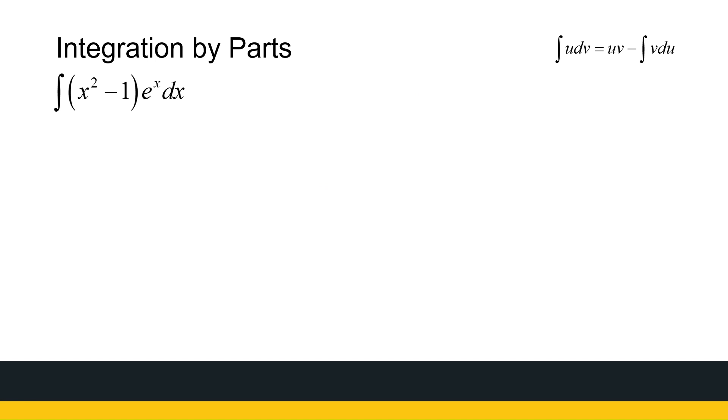x squared minus 1 times e to the power x. Again, I'm going to say let u be equal to the first part, x squared minus 1. It doesn't always work out that way, but at the end of this video, I will show you some ways to how you can choose your u and your v confidently. dv is then e to the power x dx.